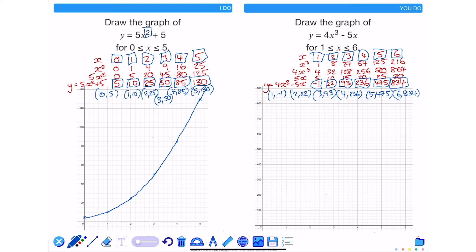Plot in all of the points and join with a smooth curve. I've now drawn the graph of y equals 4x cubed minus 5x.